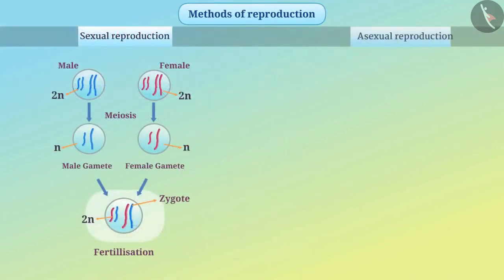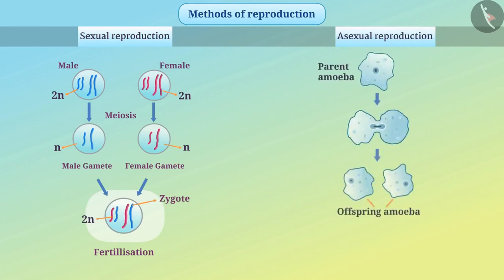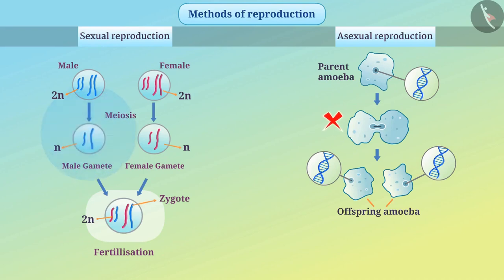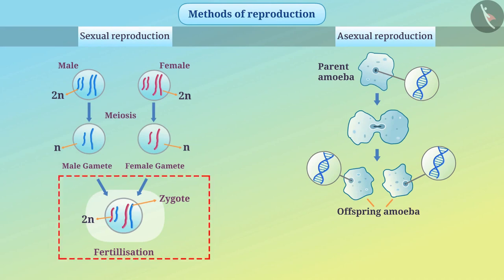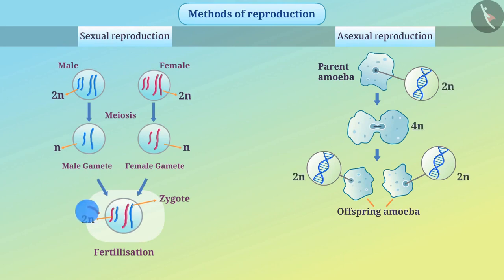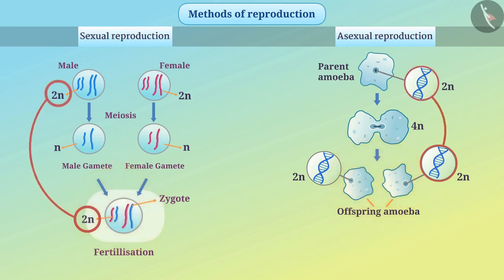In case of asexual reproduction, a replica of DNA is formed for the offspring. In this process, no male gamete and female gametes are produced, and therefore there will be no fertilization and so there will be no zygote. Both kinds of reproduction are similar in the fact that the number of chromosomes or the amount of DNA in the offspring is similar to that of each parent.